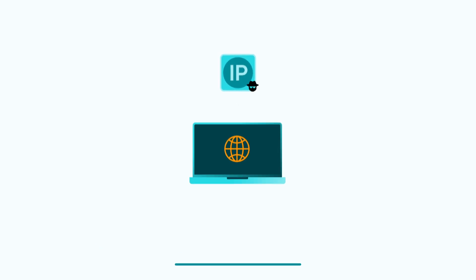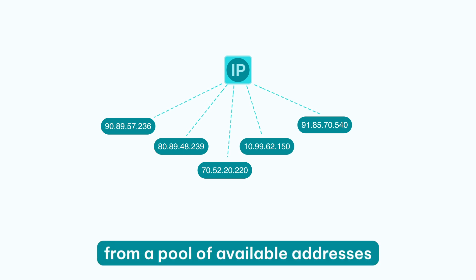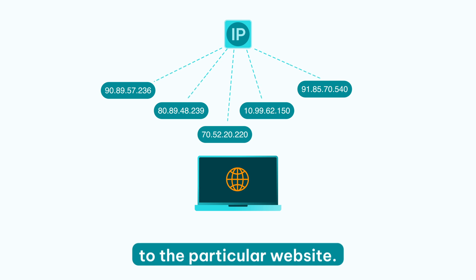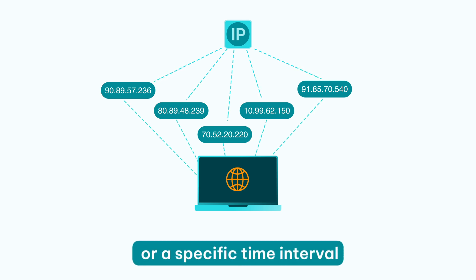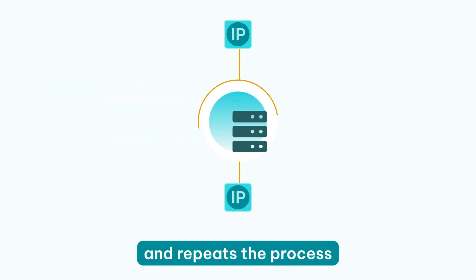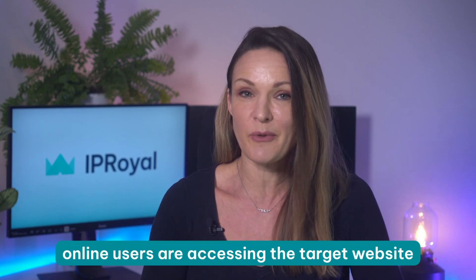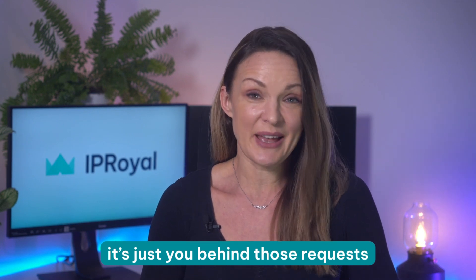It's that simple. They draw the new IPs from a pool of available addresses and forward your request to the particular website. After a preset number of requests or a specific time interval, the proxy switches to another IP and repeats the process. In other words, rotating proxies make it seem like multiple online users are accessing the target website.